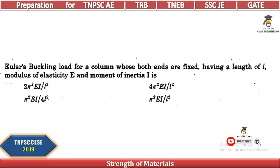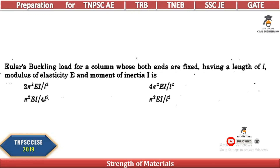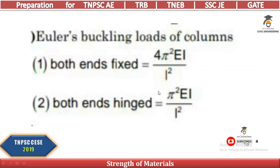What is the buckling load for a column whose both ends are fixed? The four or five end conditions are: both ends fixed, one end fixed and one end hinged, both ends pinned, and one end fixed with the other end free. For both ends fixed, the buckling load is 4π²EI / L².